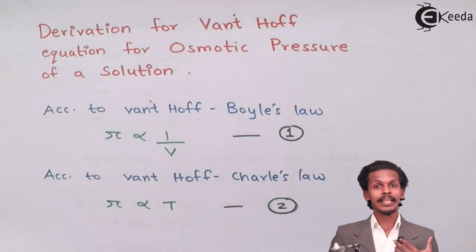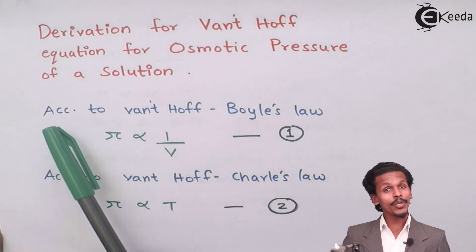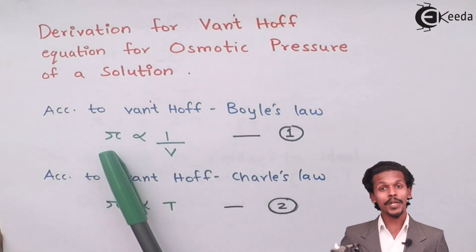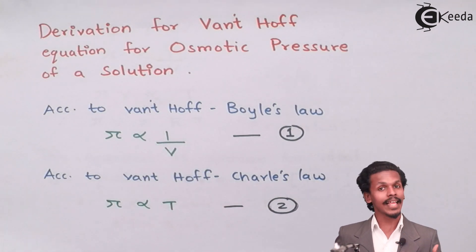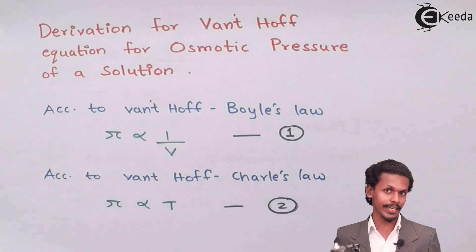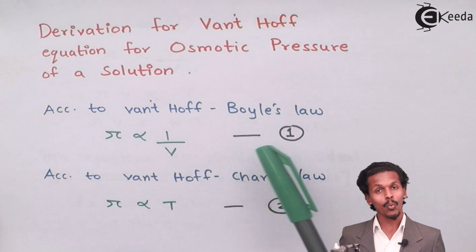According to Van't Hoff-Boyle's law, osmotic pressure is inversely proportional to volume, meaning if volume increases then the osmotic pressure will decrease. Let us mark this equation as equation one.